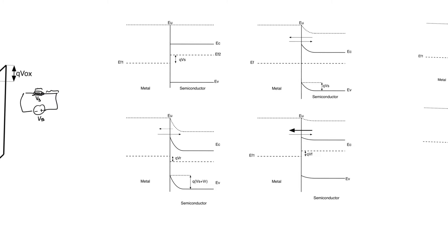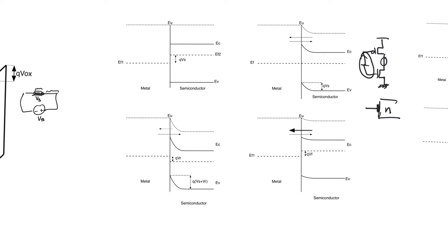Interfaces between metals and semiconductors are also critically important because when we look at devices, we find that we have to make contacts between metals and semiconductors whenever we wire together multiple transistors. For example, in a CMOS inverter — which is two transistors connected using metal wires — those metal wires make contact with semiconductors. So we have to understand what happens when a metal makes contact with an N-type or P-type semiconductor, and what happens when we contact a P-N junction at its two terminals.